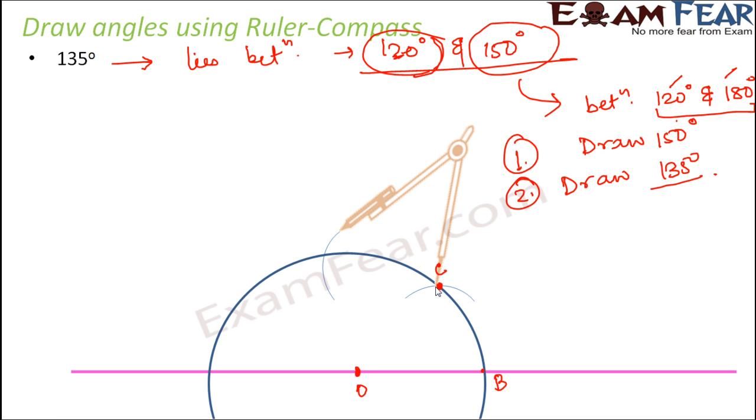For 120, what we will do, we consider C as the center and the same radius again. So we will see that the new arc intersects at point D. Now when you join point O and point D, you would get a 120 degree. And what is 180 degree? 180 degree is straight angle. So this straight line makes 180 degree.